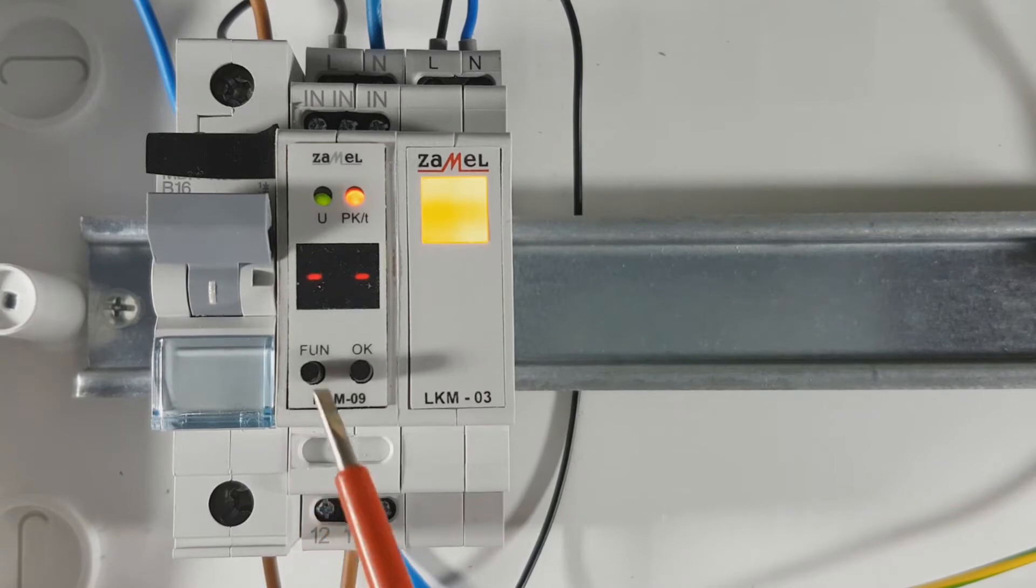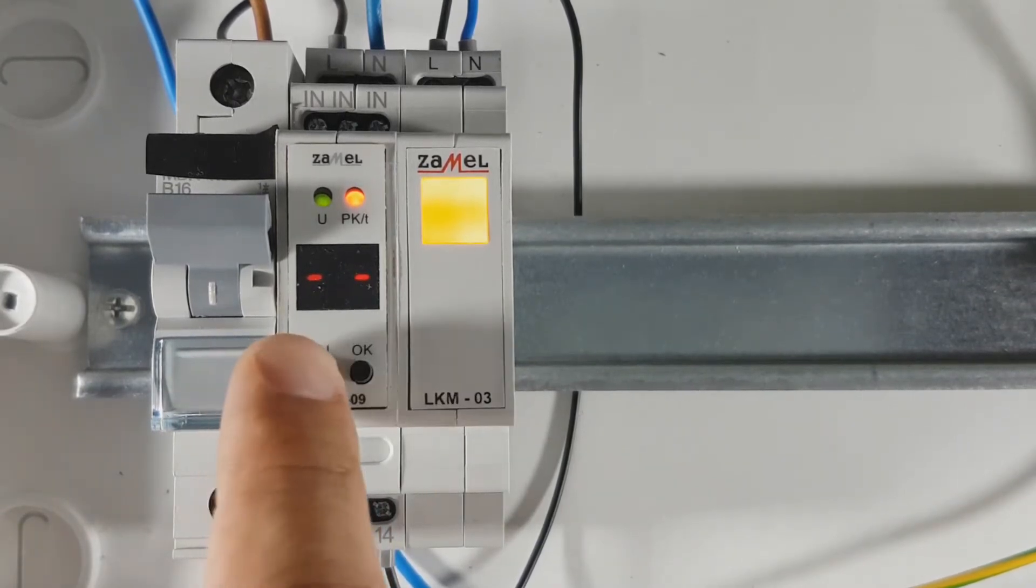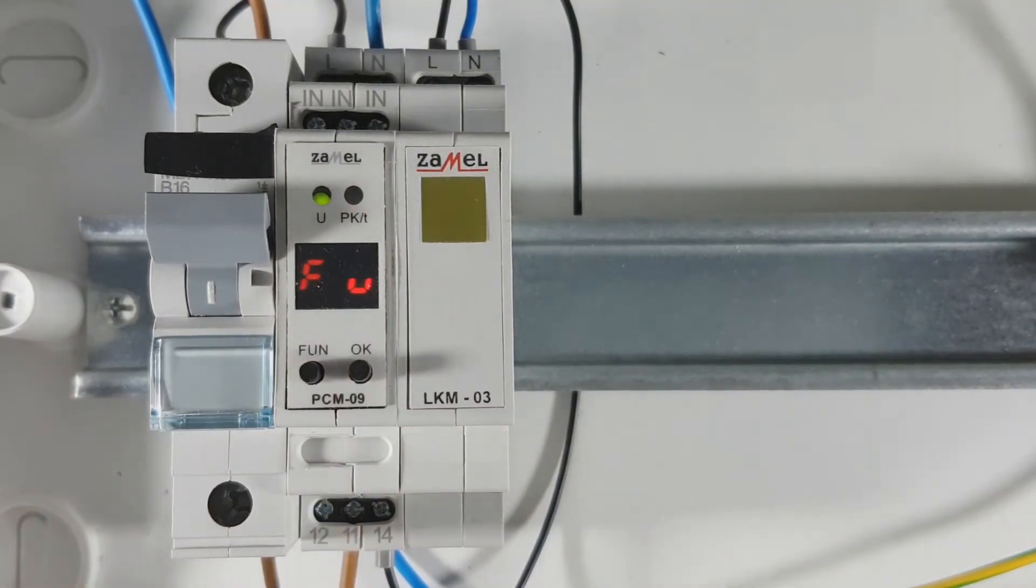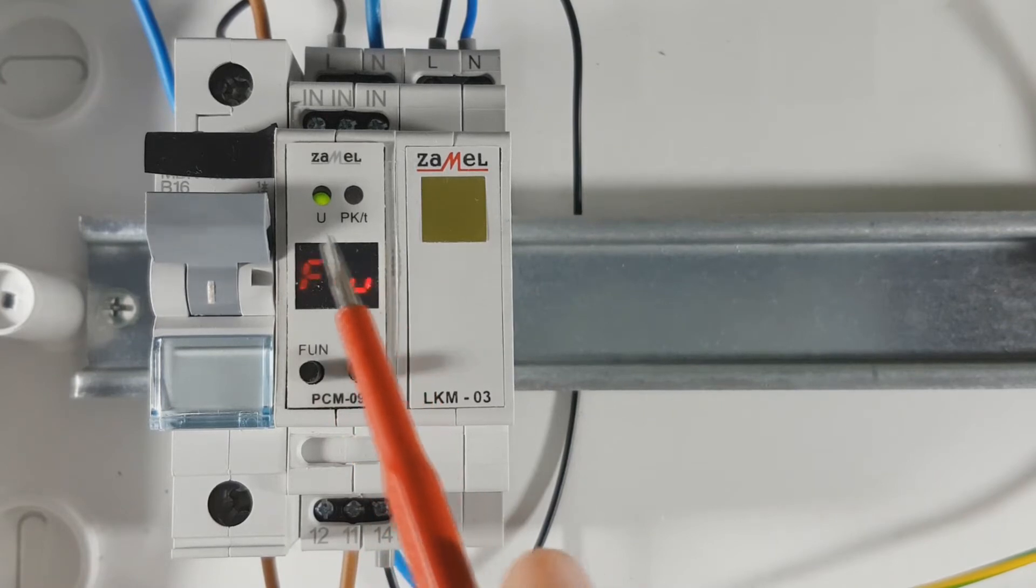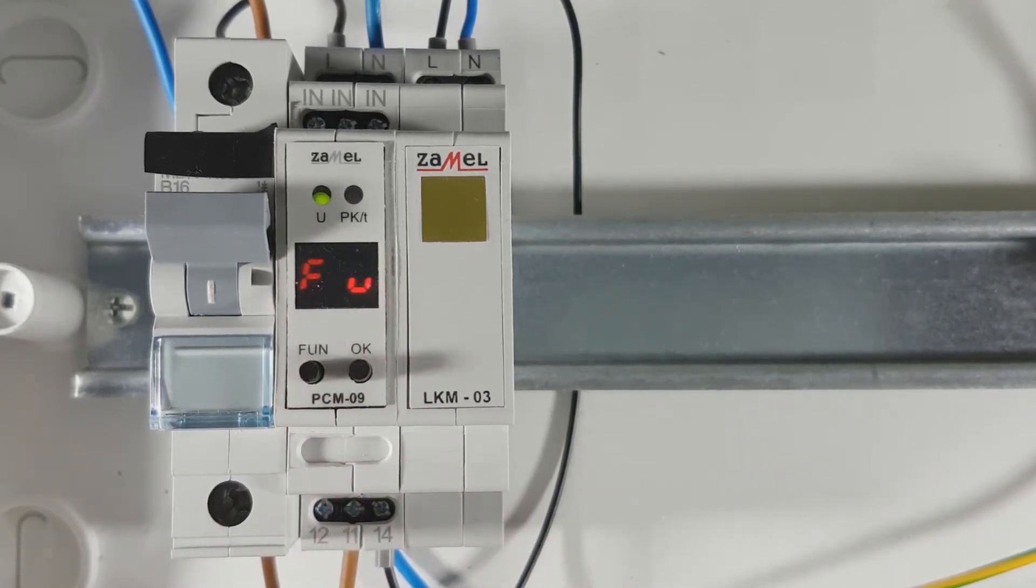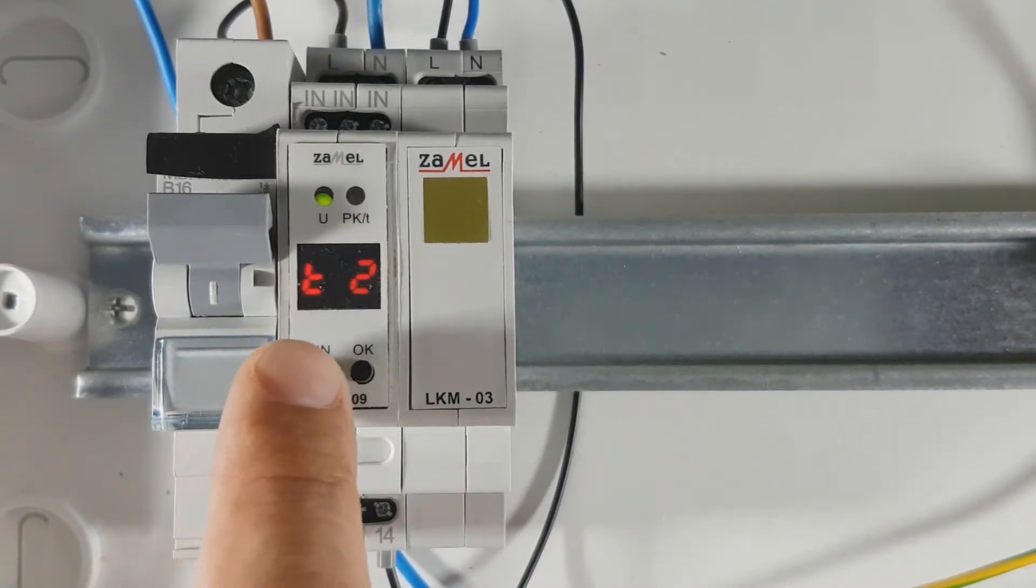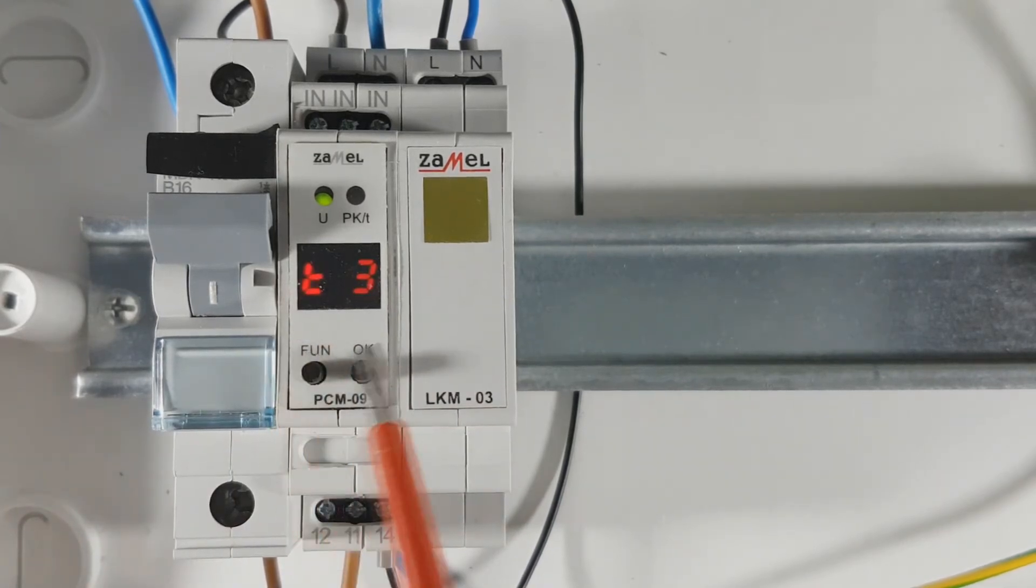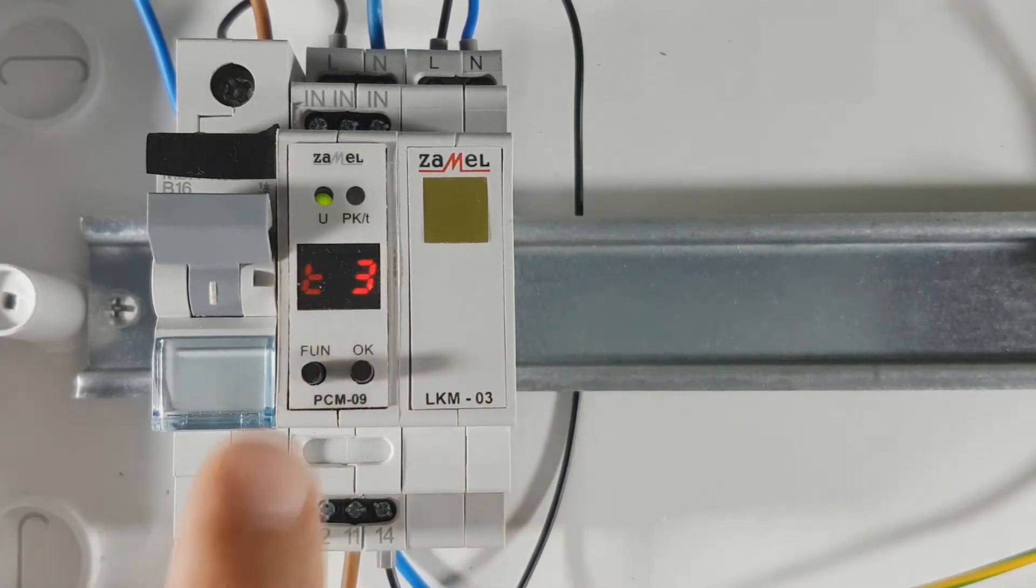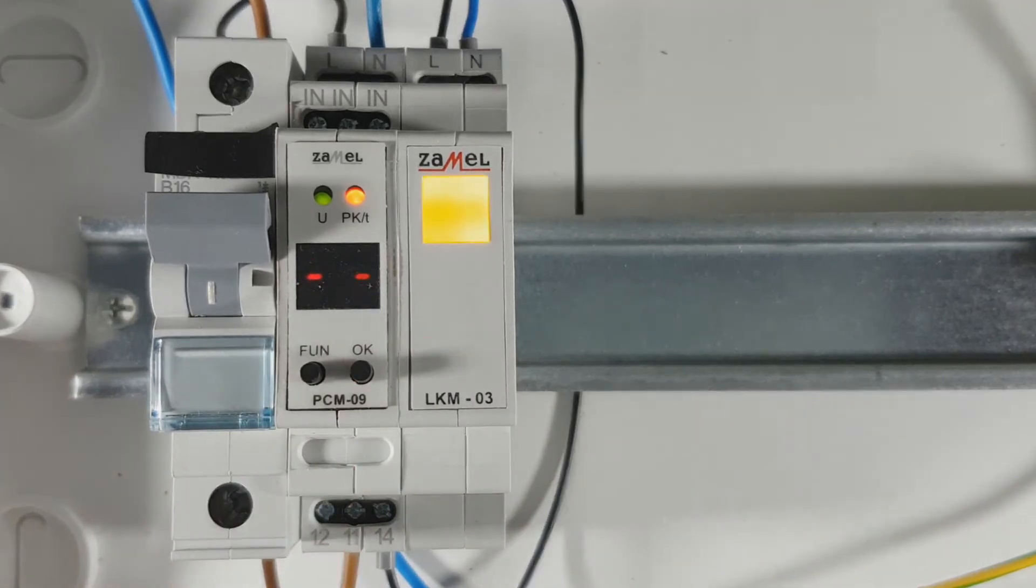In order to set the device, press the function key for about 3 seconds. The display shows available operating modes of the relay. The next press of the function button selects the times: accordingly, T1, T2, or T3 time. The following next press of the function button quits the programming mode and begins regular device operation in the selected mode.